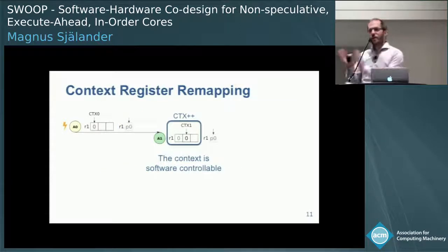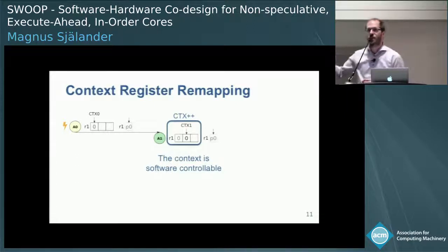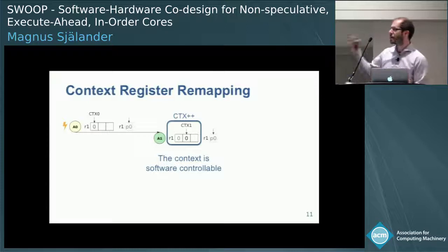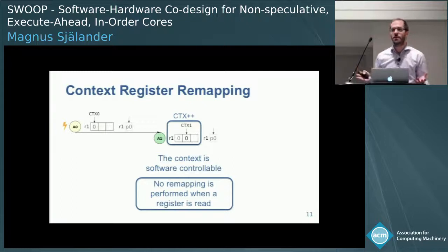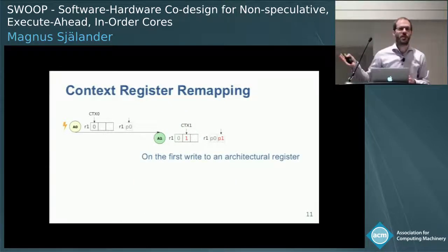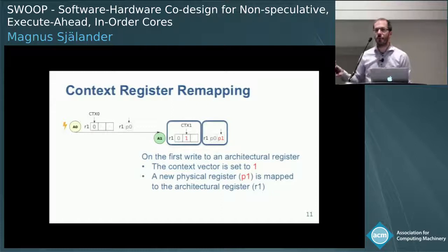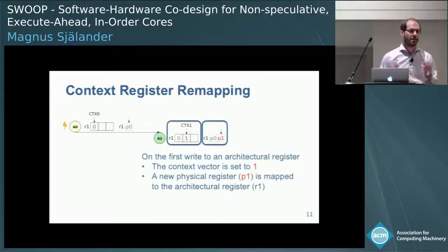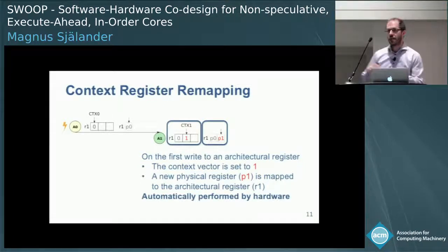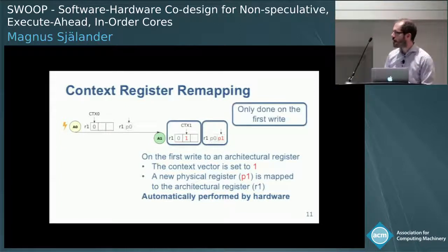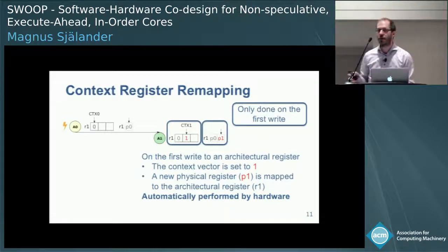When we jump to a new access phase, the compiler introduces a new CTX++ instruction which updates the context — so this is software controllable. As long as we're only reading a register, nothing happens. But if we write to a register, such as writing to R1, on that first write the context register bit is set to 1, marking that we have a write to this one. We get a new mapping: physical register P1 is mapped to R1, and this is now our new register. This happens automatically in hardware. It's only done on the first write — if you write multiple times to R1, we still use P1 as the register for this context.